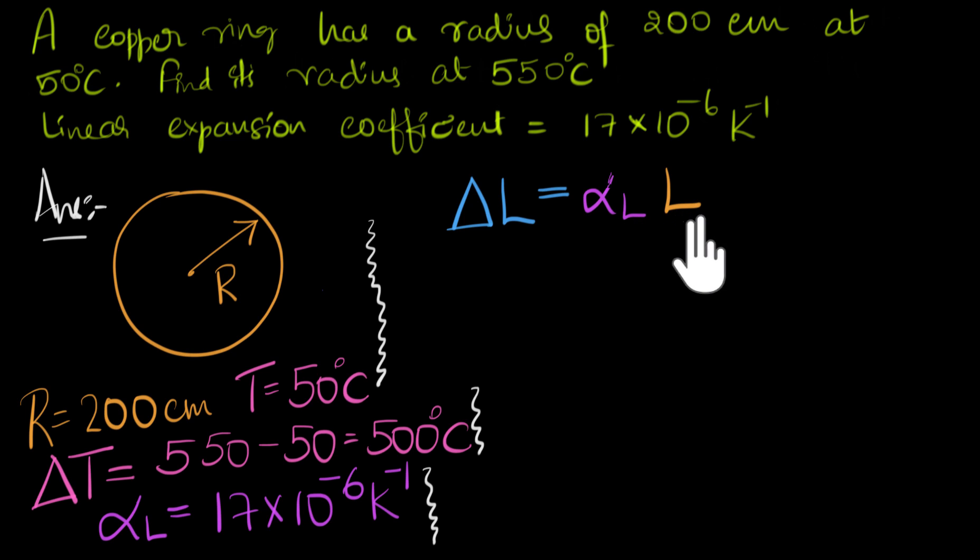But again, this represents the change in the length for one Kelvin rise. What if you had two Kelvin rise? Well, it would be double of this. Ten Kelvin rise, it would be 10 times this. What if you have delta T Kelvin rise? It would be delta T times this. And so this is how we can connect changes in the length to change in temperature and alpha L.